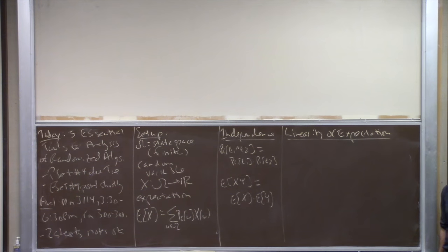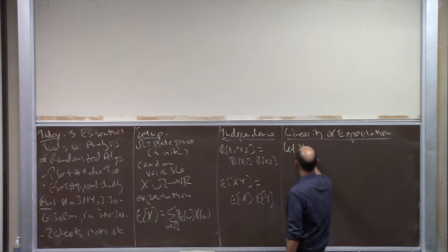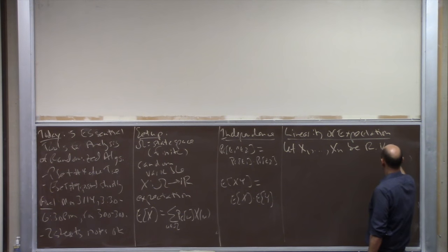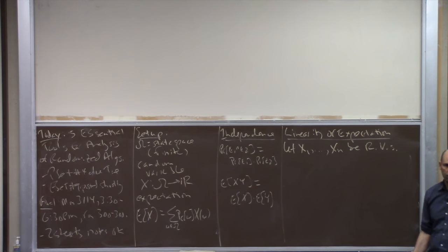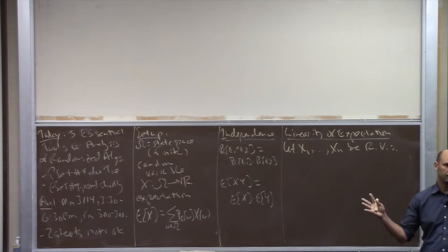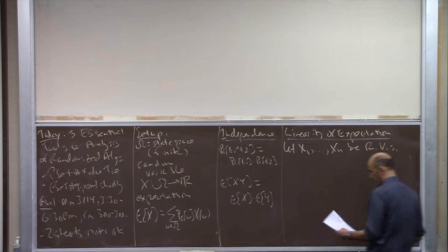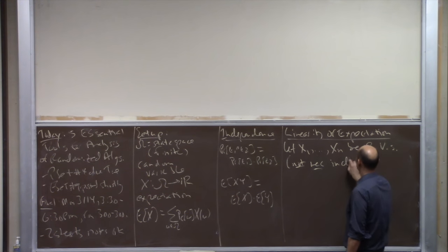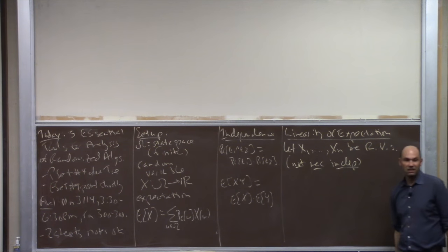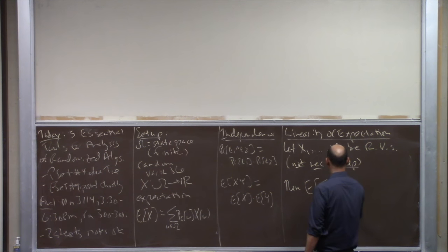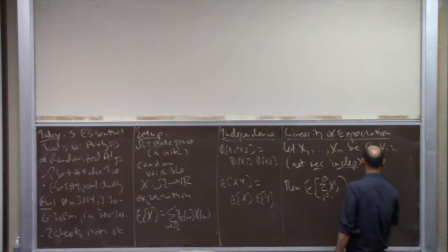Linearity of expectation — super simple but super useful. You've seen this before. Suppose you have n random variables all on the same state space. Linearity of expectation says you can take sums and expectations and interchange them to your heart's content. The key reason it's so powerful is there's no independence assumption. The statement is: the expected sum equals the sum of the expectations.